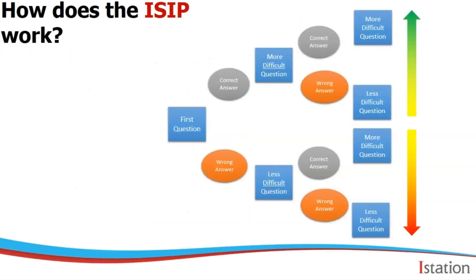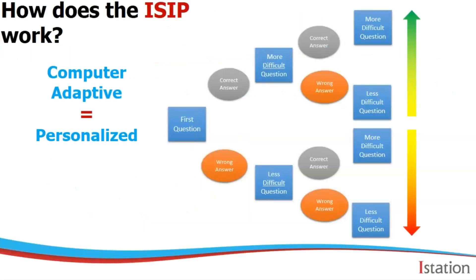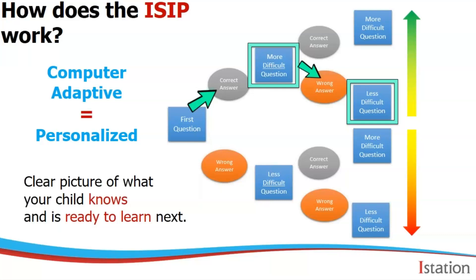So how does the assessment or iSIP work? It is computer adaptive, in order to personalize instruction for your child. When your child gets a question, if they answer correctly, they will be given a more difficult question. If they answer incorrectly, they will be given a less difficult question. It will continually adapt up and down in order to give the teacher a clear picture of what your child knows and is ready to learn next.